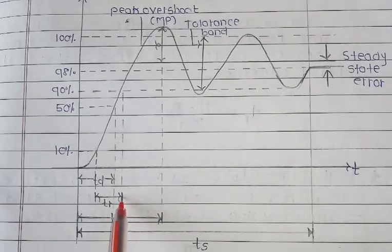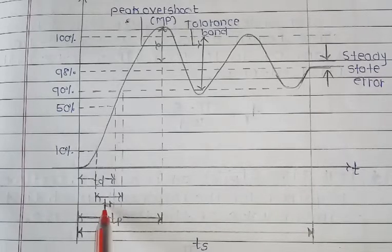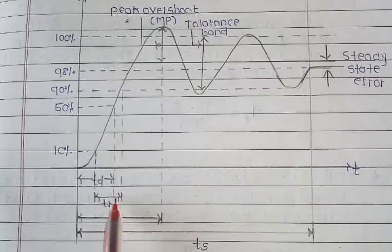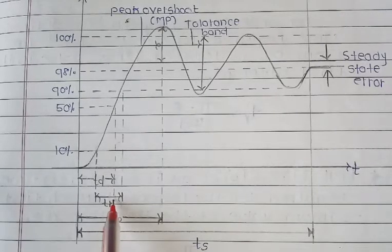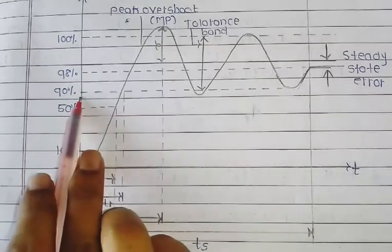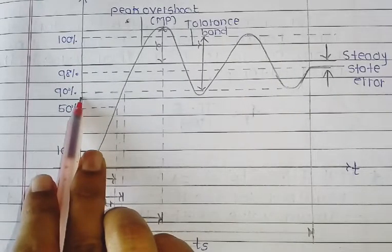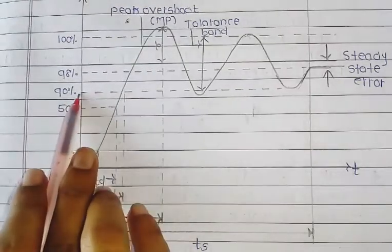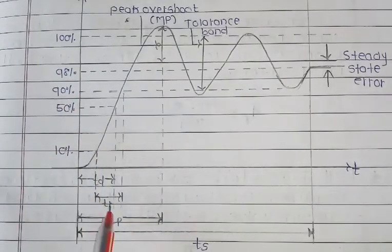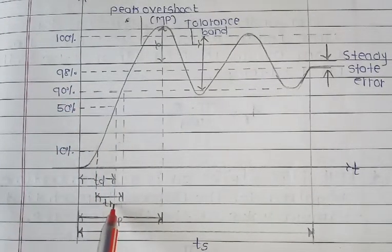Rise time is denoted as Tr. There are two basic definitions: the first is for the overdamped system and the second is for the underdamped system. For the overdamped system, rise time is defined as the time required for the response to rise from 10% to 90% of the final value in the first attempt.